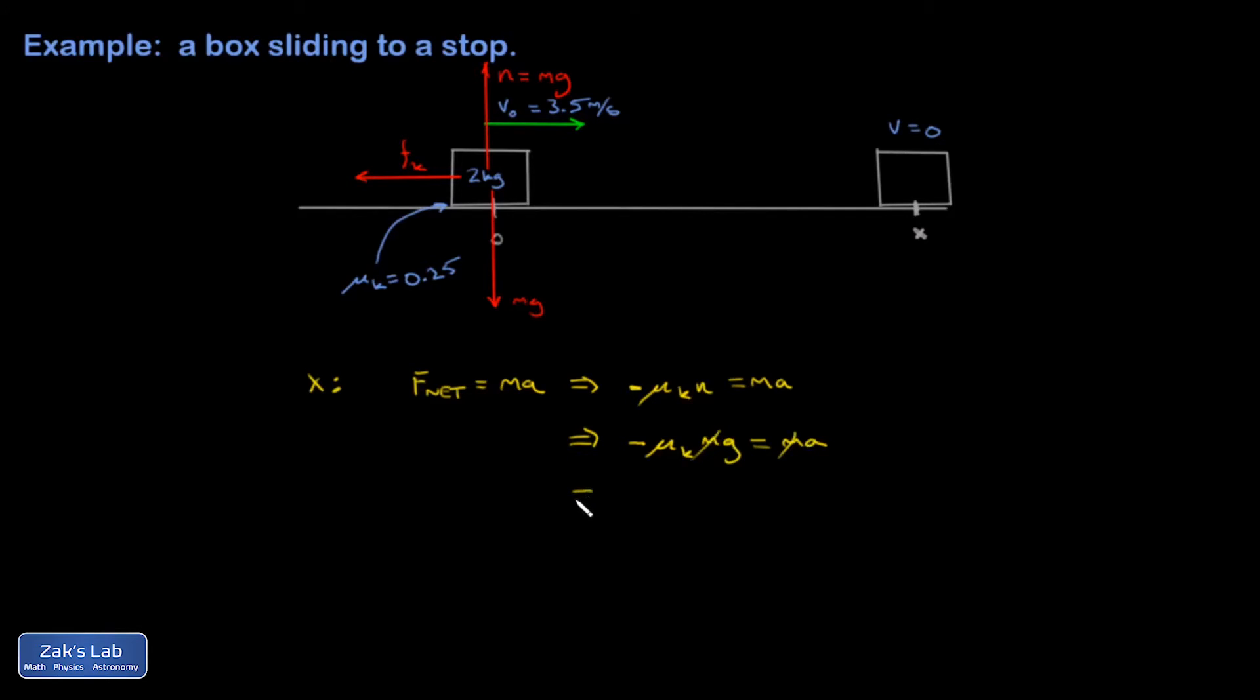So it doesn't actually matter what the mass is. So that's gone. So then I'll plug in some numbers, and I get that A is equal to negative mu k times G, equals negative 0.25 times 9.8. And I get 2.45 meters per second squared.